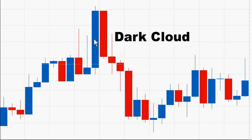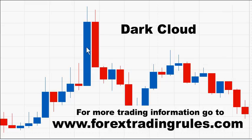The dark cloud cover pattern is a bearish counterpart to the piercing pattern and is very similar to the bearish engulfing pattern. It is a two candle formation located at the top of an uptrend. The first candle is a blue bullish candle, which is a continuation of the uptrend. The second candle is a bearish red candle where the body closes more than halfway down the previous blue candle. Ideally the red candle will close at or very near its lowest price. The longer the blue and red candles, the more forceful the reversal, and the lower the red candle closes into the blue candle, the stronger the reversal.